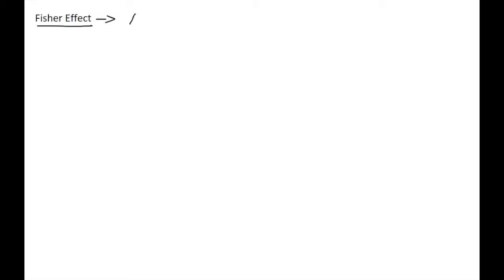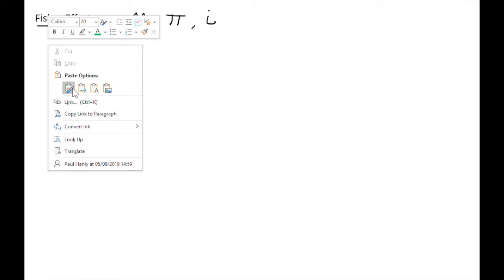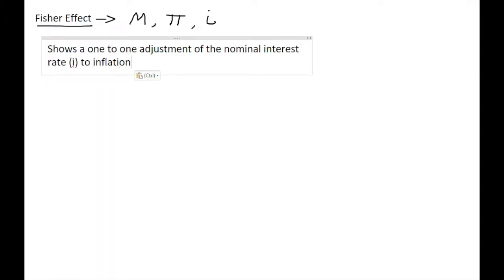This equation shows us the relationship in an economy between three different things: number one, the money supply in the economy, represented by MS; number two, inflation, represented by the pi symbol; and number three, the interest rate, represented by i. So the Fisher equation shows the relationship between these three fundamental variables in the economy.